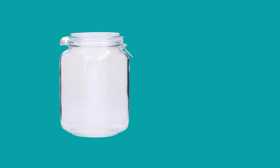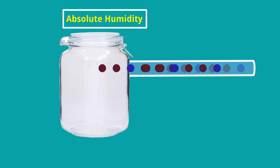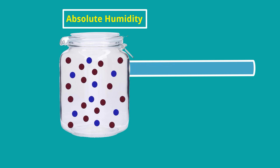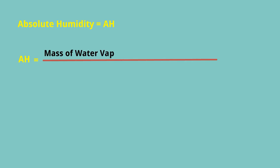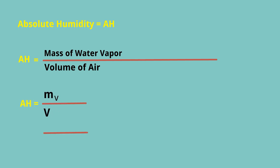Let's work through an example. We have an empty container into which we put moist air — dry air and moisture content together. The mass of water vapor is 20 grams and the volume of the container is 20 meter cubed. Using the definition, absolute humidity equals mass of water vapor divided by volume of air, so mv = 20 grams and v = 20 meter cubed, giving an absolute humidity of 1 gram per meter cubed.